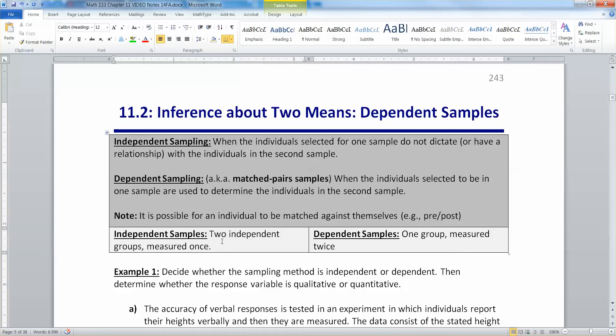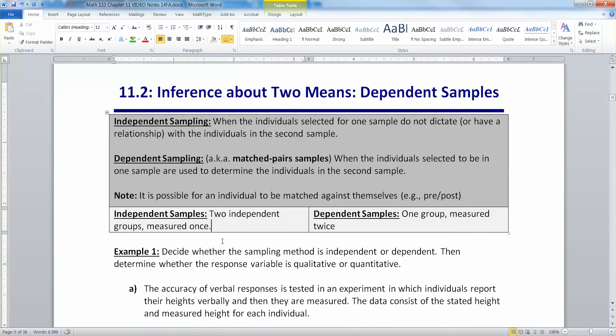All right, so we're going to determine whether the following sampling method is independent or dependent, then determine whether the response variable is qualitative or quantitative. Qualitative will be working with proportions, section 11.1. Quantitative will be 11.2 and 11.3 when we're working with quantitative means.